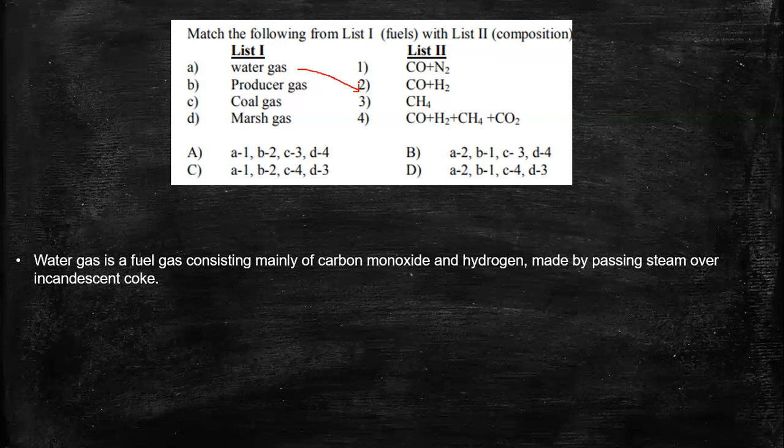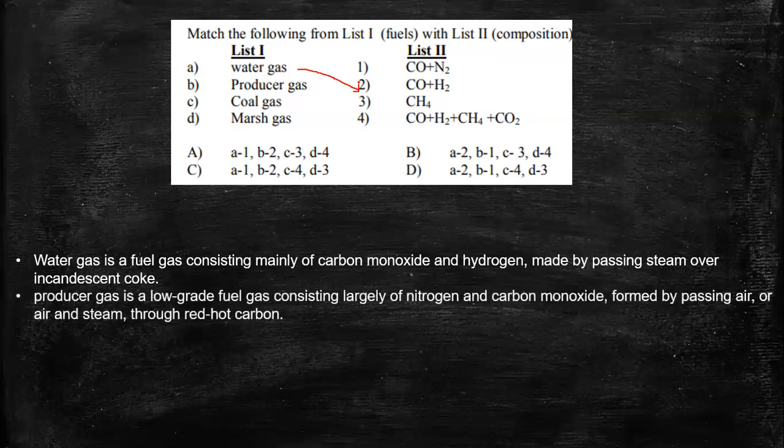So that is something we understood. Now producer gas is a low-grade fuel and it is a combination of nitrogen and carbon monoxide. So we got this over here and how is this formed? Again, it is formed by passing air or steam through red-hot carbon.